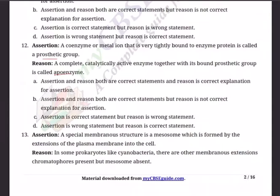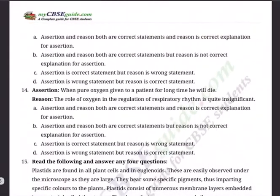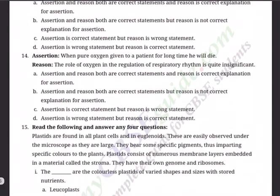Question 13 Assertion: A mesosome is a special membrane structure formed by the extensions of plasma membrane into the cell. Reason: In some prokaryotes like cyanobacteria, there are other membrane extensions called chromatophores present, but mesosomes are absent. Options: (A) A and R both correct, R is correct explanation; (B) A and R both correct but R is not correct explanation; (C) A correct but R wrong; (D) A wrong but R correct.